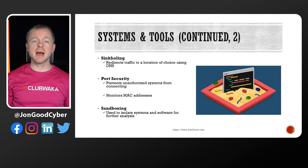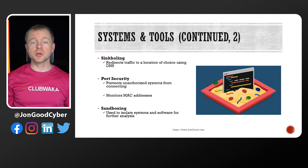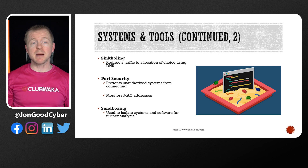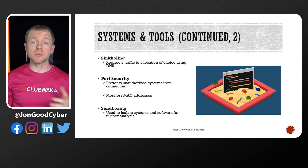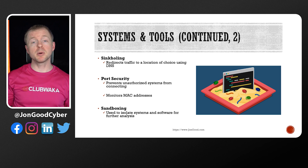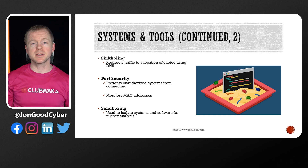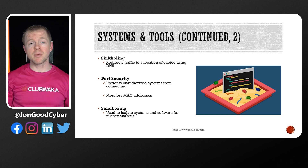Sinkhulling redirects traffic from the intended destination to a location of your choice through DNS. This way, traffic doesn't end up at malicious sites. Port security looks at MAC addresses on a switch to make sure that only authorized systems can connect. Sandboxing is a method where we can put systems or software into an isolated area for further analysis. That way, if we find something we don't like, we don't have to have our entire network compromised.